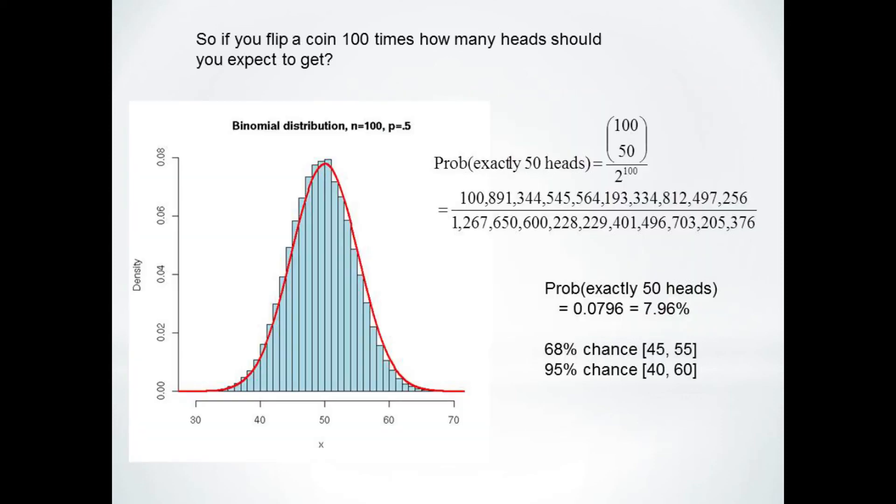You can also see that this shatters a common misconception that flipping a fair coin 100 times should result in 50 heads and 50 tails. Notice from this distribution curve that getting 50 heads and 50 tails will only happen about eight percent of the time.